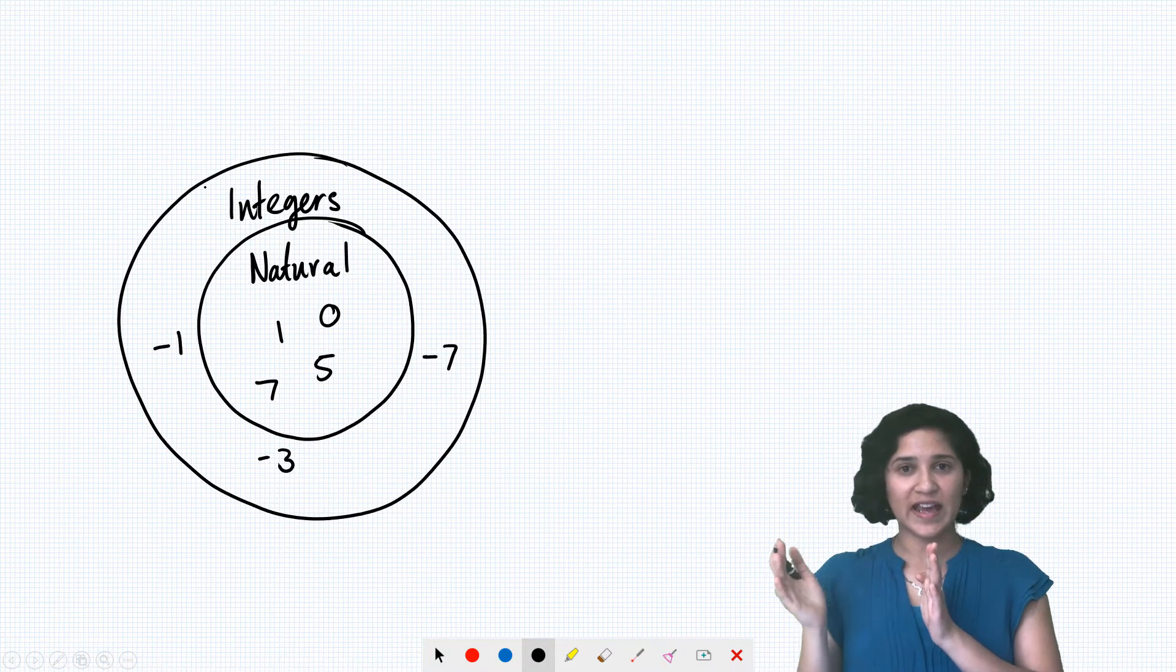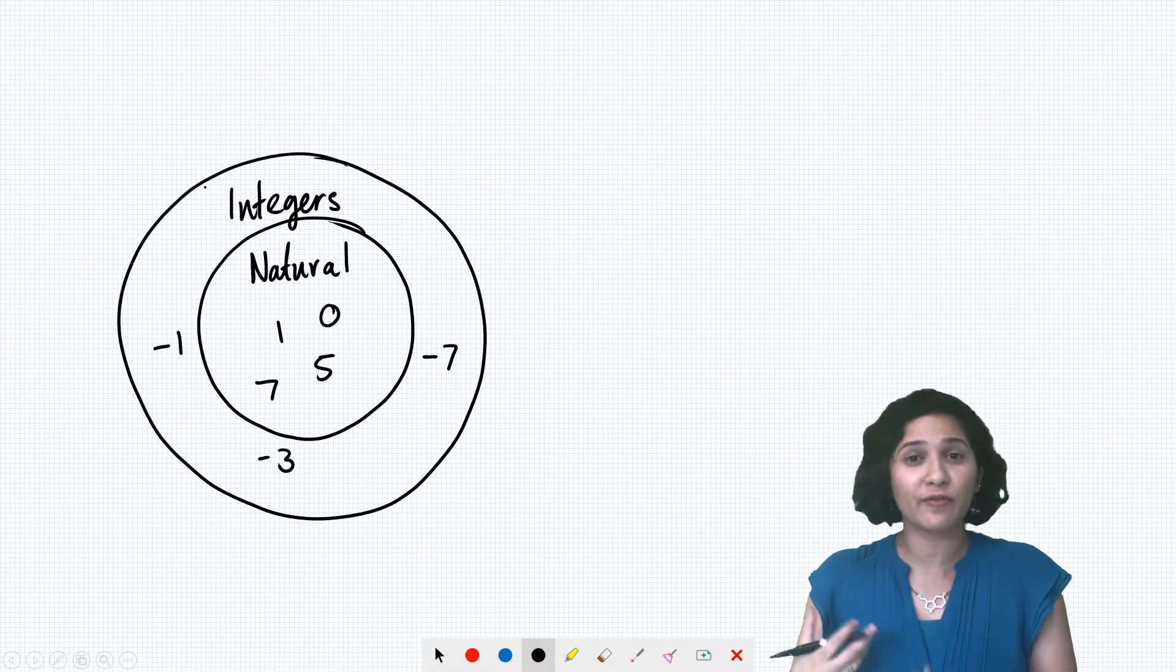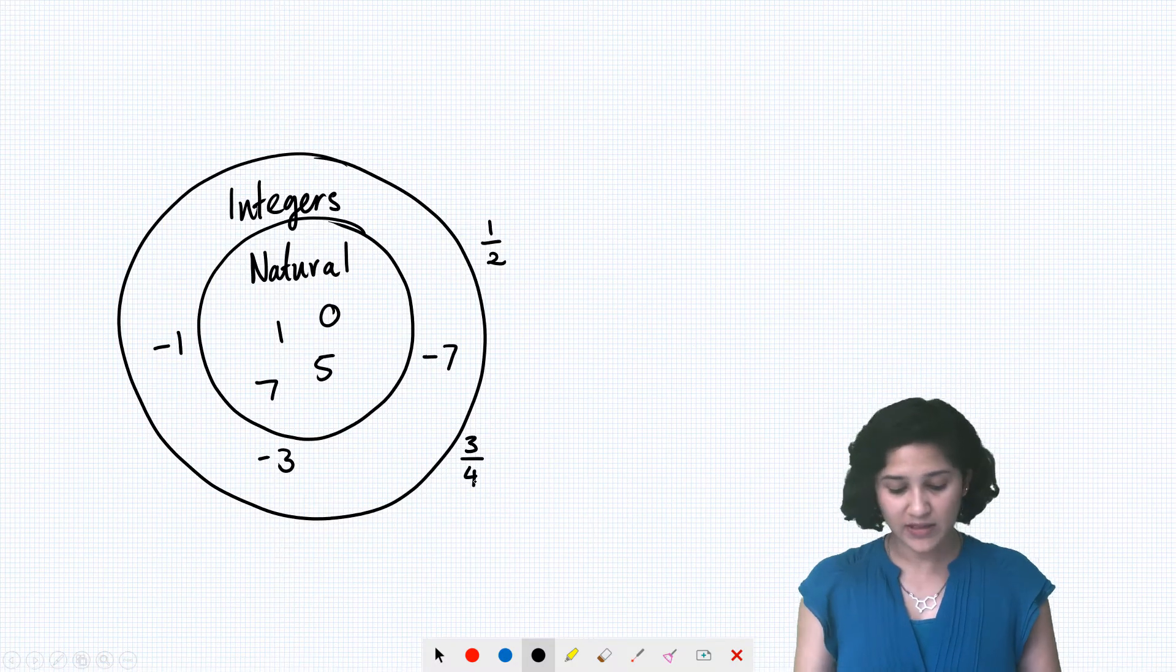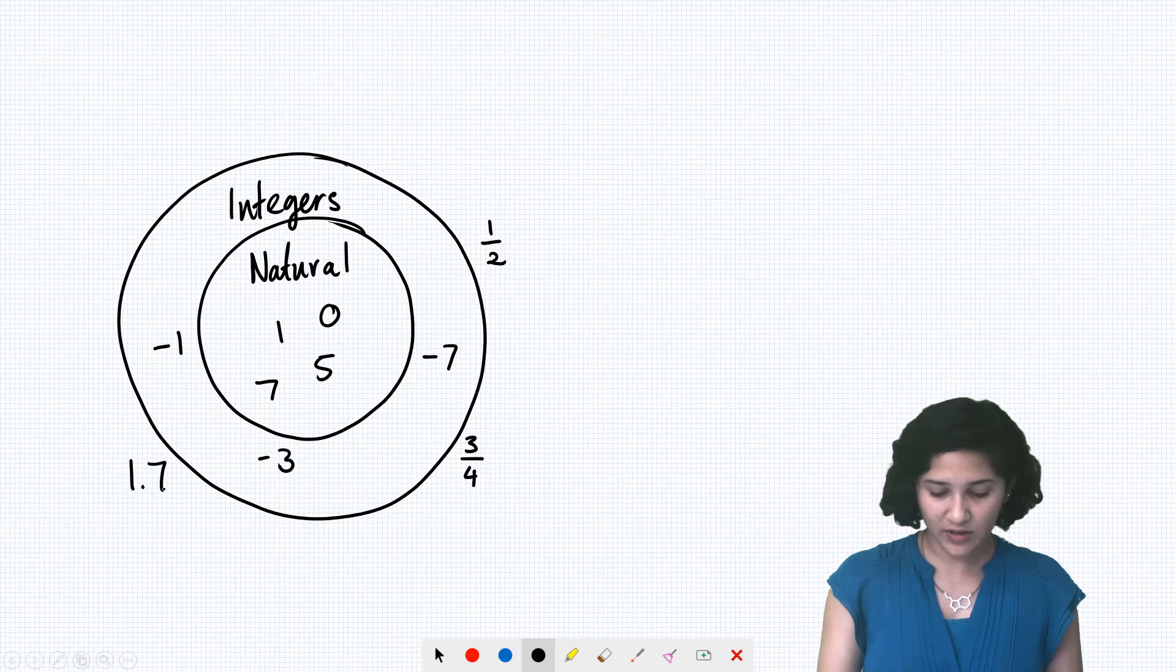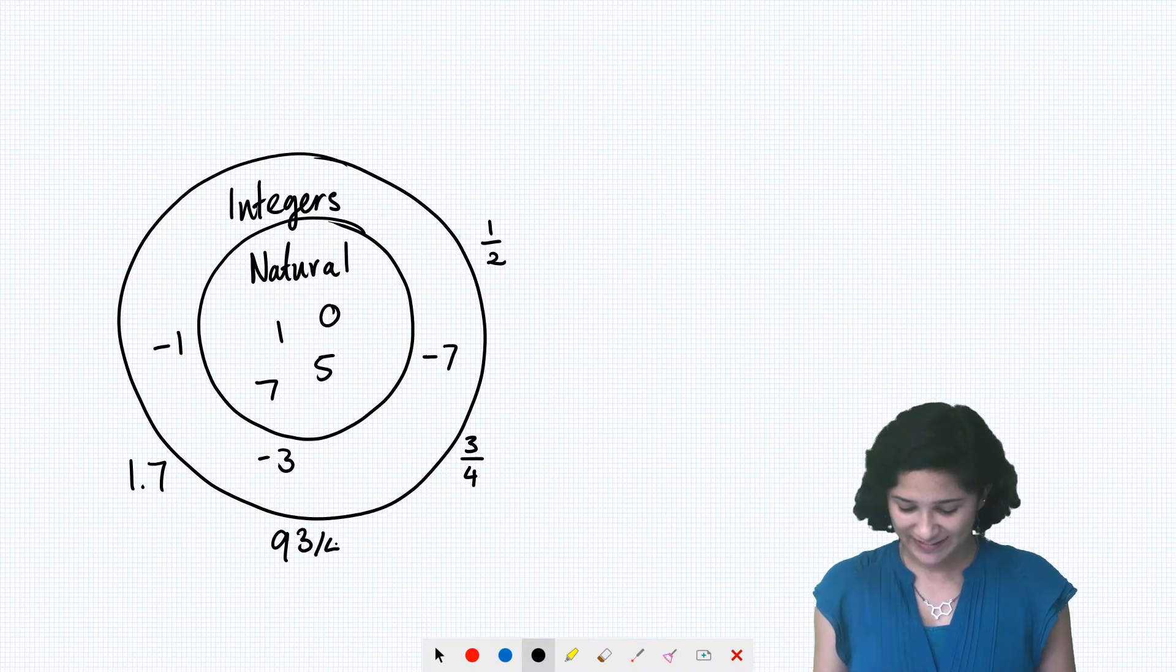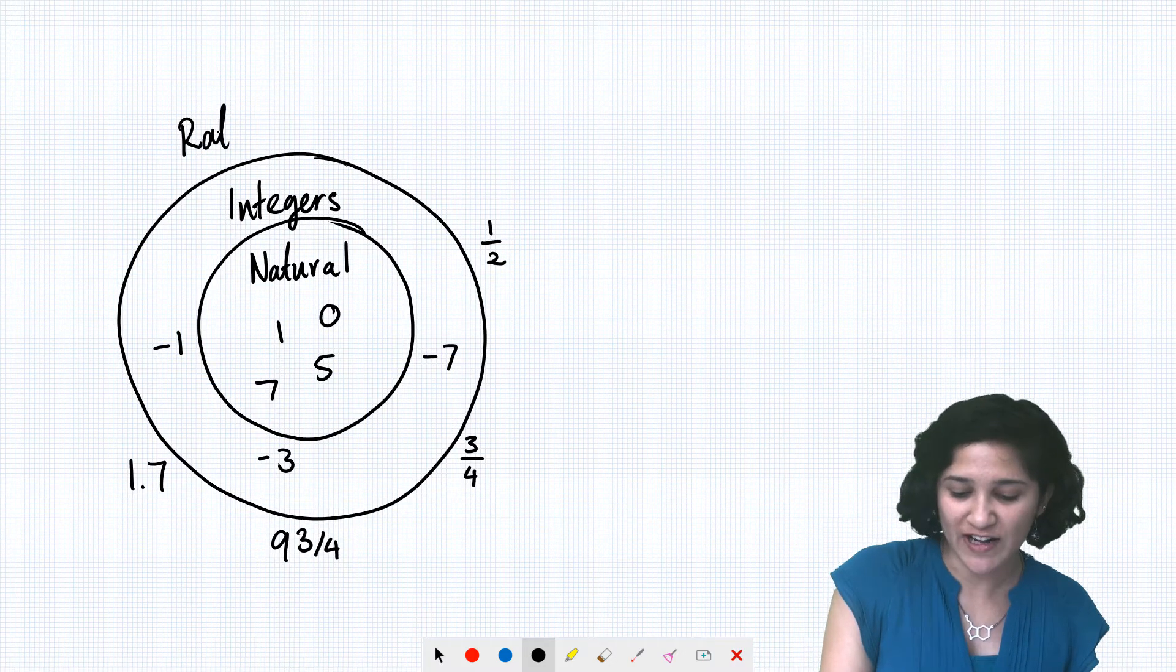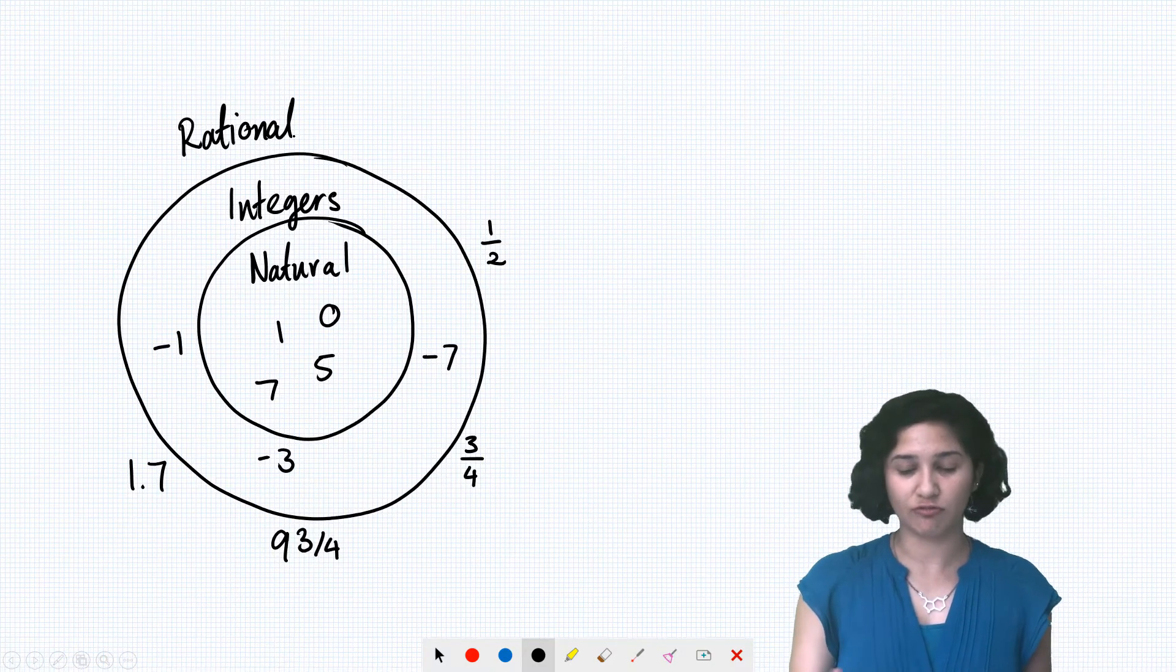Next, you learnt that you don't just have the whole numbers, you've also got the numbers in between those numbers. So all the fractional numbers. So things like a half, 3 quarters, even mixed numbers like 1.7 or 9 and 3 quarters for any Harry Potter fans out there. So this is our set of rational numbers. And we'll talk in a bit about why it's called rational.